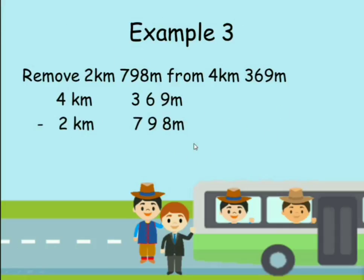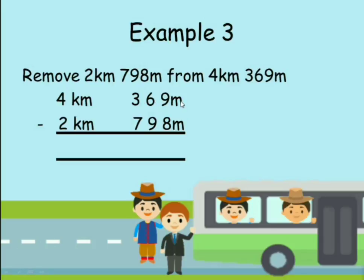If you look carefully, you will realize that 798 meters is larger than 369 meters, so you cannot subtract directly. You will go to the kilometers place and borrow. You borrow one kilometer from 4 kilometers and you will be left with 3 kilometers.